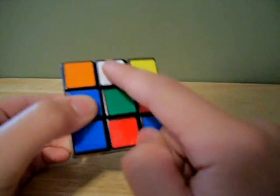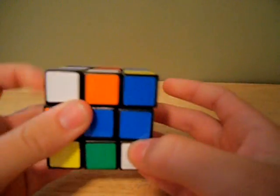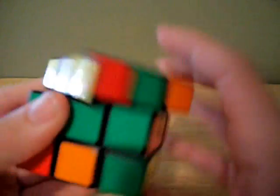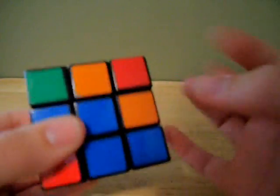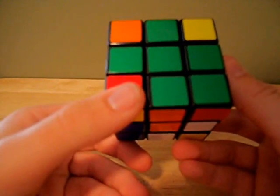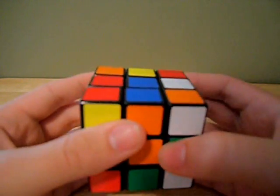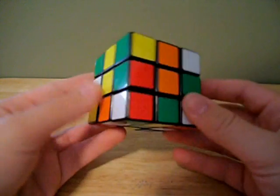With any method, you start by solving the cross. Normally, on the regular layer by layer method, they have you solve the cross on the top, and then you flip the cube over onto the bottom. It's not really the fastest and best way to do it, so I suggest you learn how to do the cross on the bottom and do it on the bottom, so you can immediately go to your first and second layer.